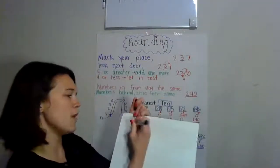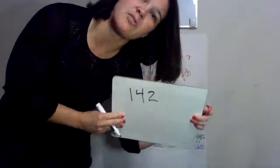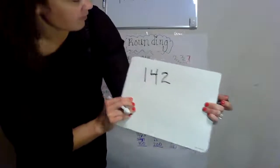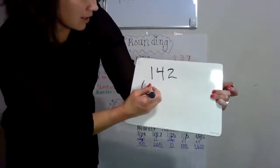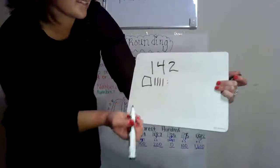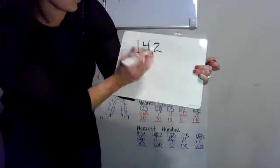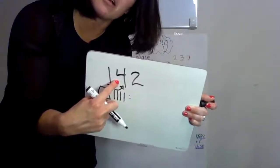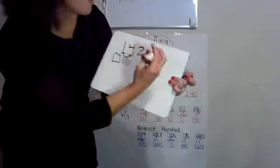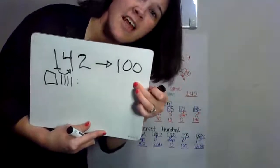Let's say I have 142. I'm going to round to the nearest 100. So which number is in the hundreds place? If I have 142, I have 1 hundred, 4 tens, and 2 ones. So the one is in the hundreds place. I'm going to find my place, look next door — that four. Is that five or bigger? Four or less? Four or less. So I'll let the one rest. 142 rounds down to 100. It's closer to 100 than 200.